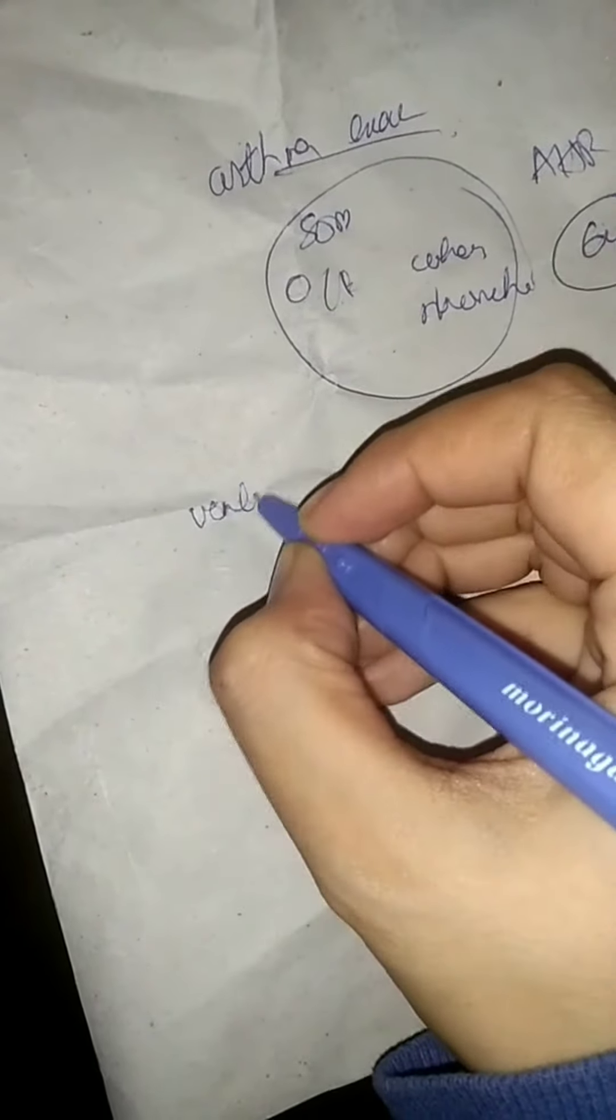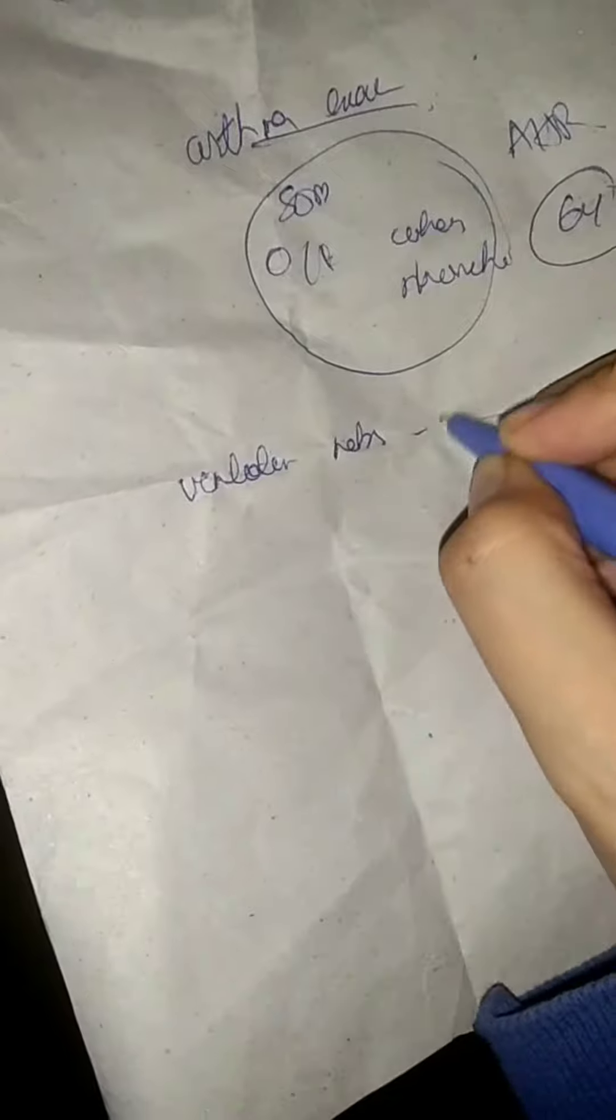First of all, you're going to go for nebs with ventolin, salbutamol, almost three times with a gap of 20 minutes.